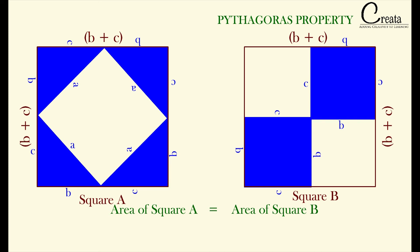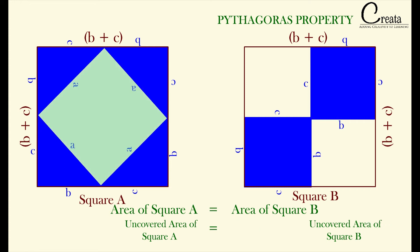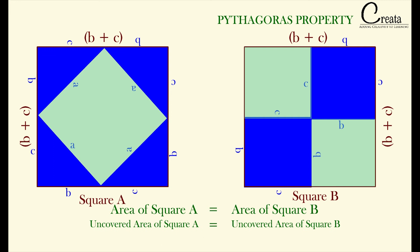The area of each square equals the area of four identical triangles plus the uncovered area. Both squares are composed of four identical triangles and the highlighted uncovered area. Since the triangles are identical, the area of four identical triangles on both sides will cancel out each other.